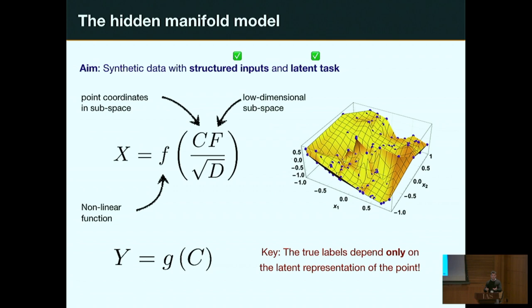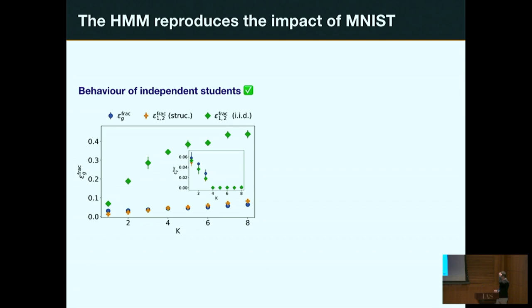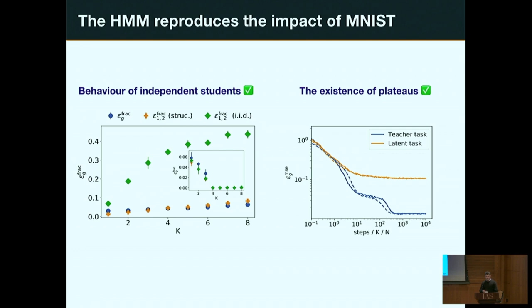The good news is that when we repeat the independent-students experiment with this hidden manifold model, it really reproduces the behavior we saw in MNIST. The generalization error between two networks fed structured inputs stays in line with their true error, but when tested on Gaussian inputs it diverges to nearly random — reproducing the overfitting phenomenon. Looking at training dynamics, the plateau disappears and we see an exponential decay just like on MNIST.